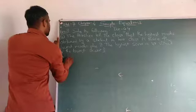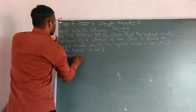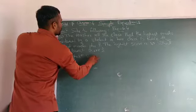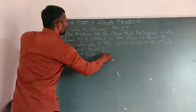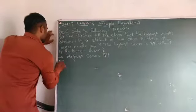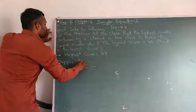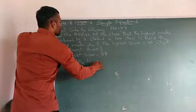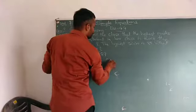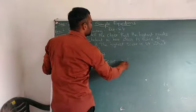So first of all, highest score is equal to 87. And suppose the lowest score is equal to x.